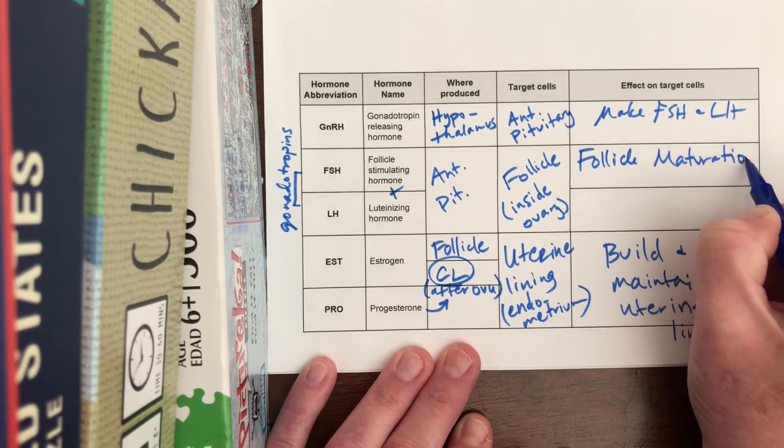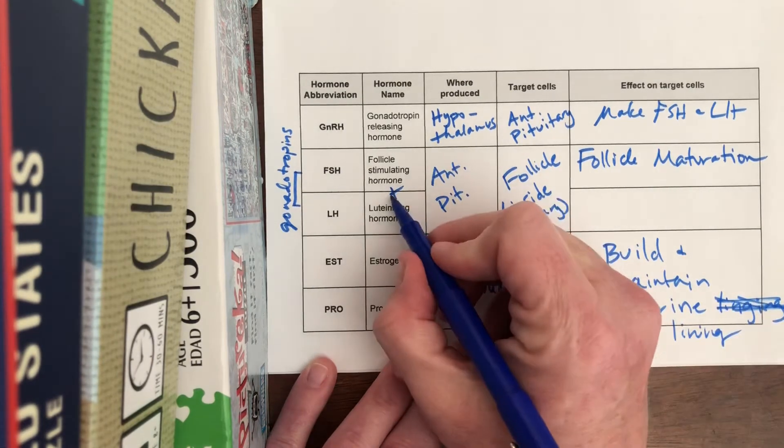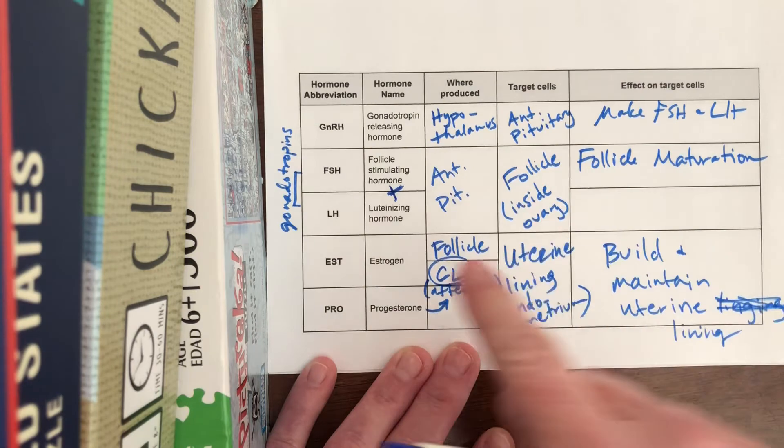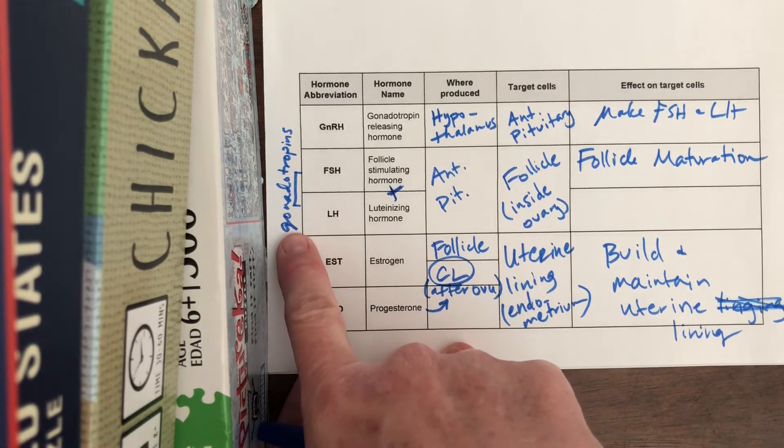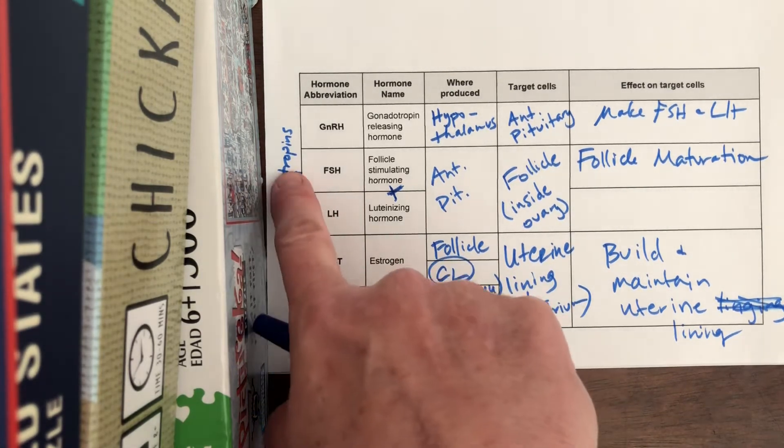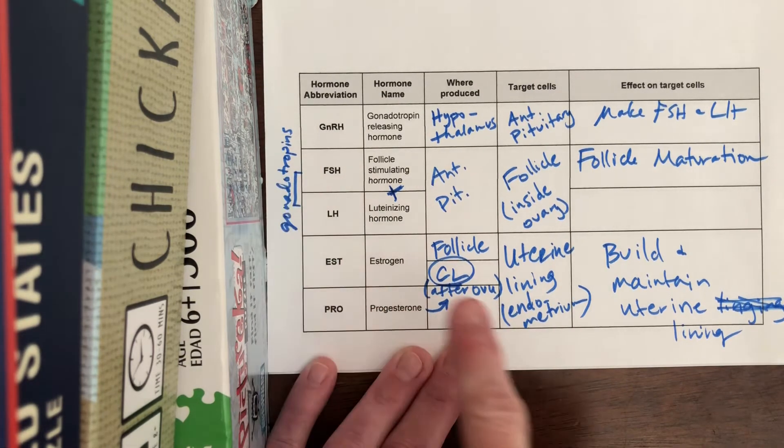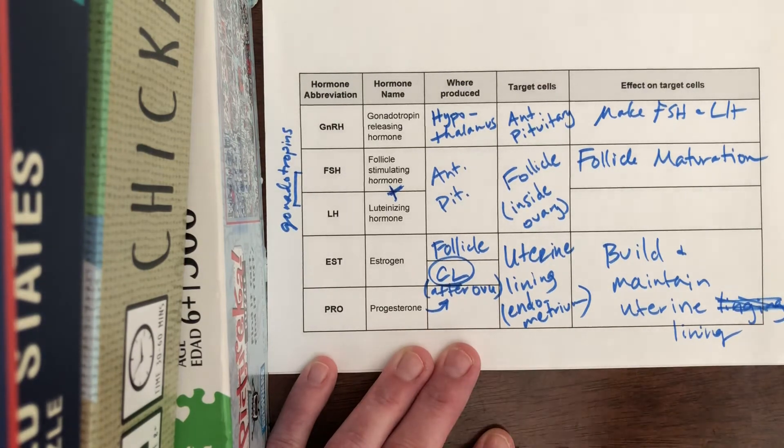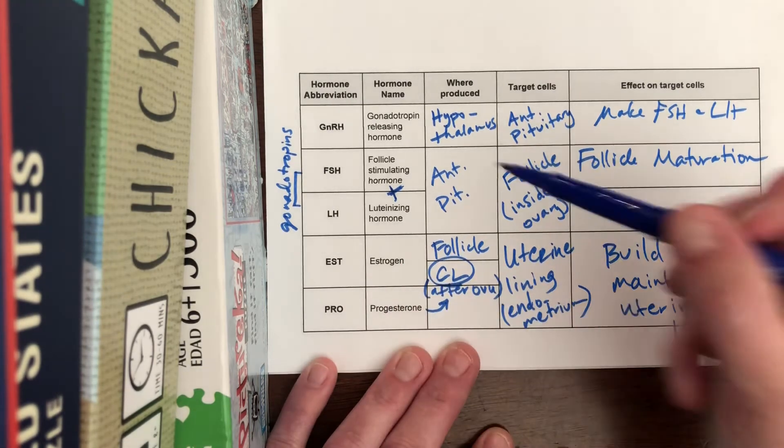Alright, and then the last one is luteinizing hormone. This is a plus on exams, by the way, because these two are both gonadotropins. The reason why they're gonadotropins is because they act on the gonad - the gonad in the female's the ovary - and they trope it. What that means by tropin is they make the ovary make its own hormones, which it does because the ovarian hormones are estrogen and progesterone.